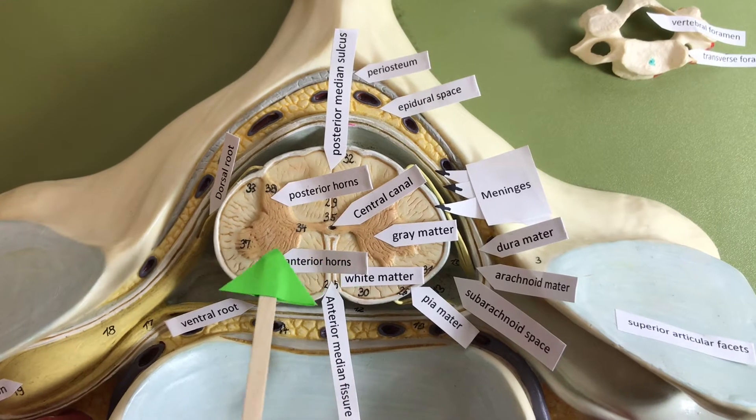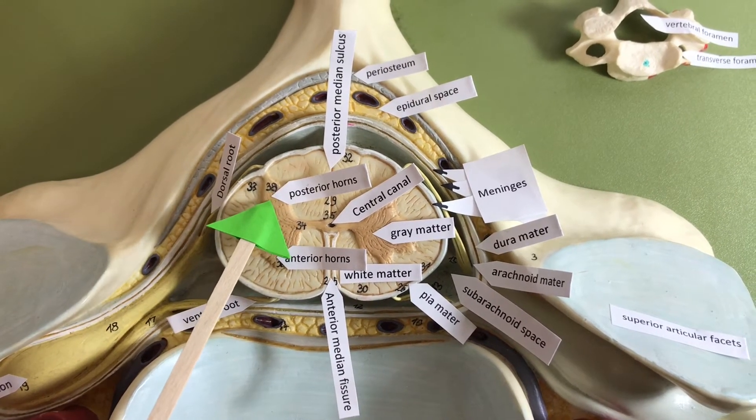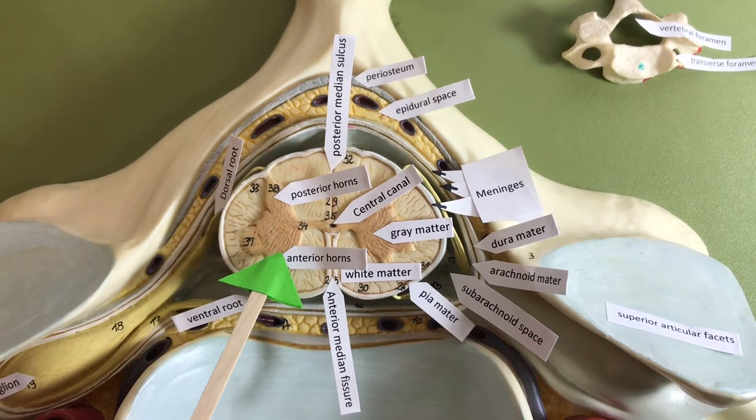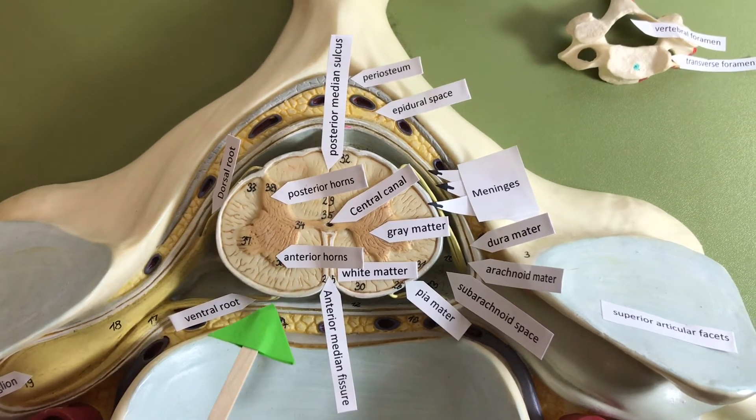Our gray matter has posterior horns. They're on the posterior side. It has anterior horns because they're on the anterior side.